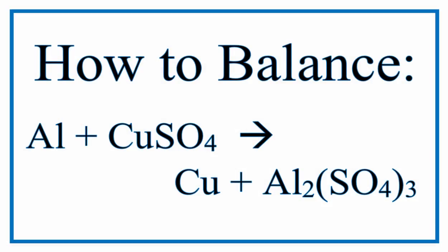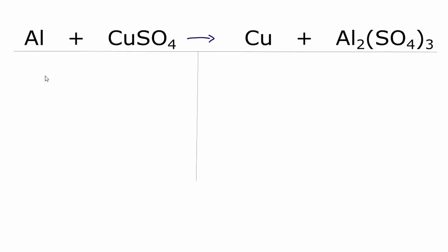To balance this equation, aluminum plus copper 2 sulfate yields copper plus aluminum sulfate. Let's add up the atoms on each side of the equation.